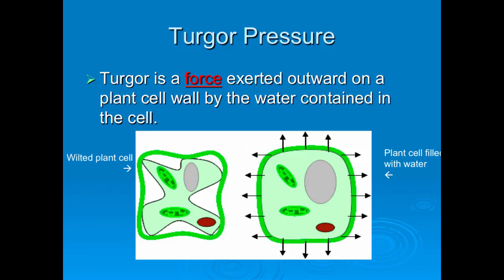After doing our phototropism lab, the poor little guy that's all the way in the clear is very wilted. This is what his cells look like. Because he is not getting enough water, his vacuole — which is an organelle inside the cell — is shrinking because it doesn't have enough water. Therefore, it's not putting this internal pressure in, and so the plant starts to wilt. It starts to lean over because the force of gravity is stronger than the force of turgor pressure.